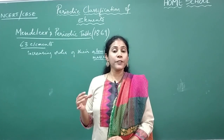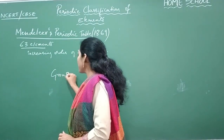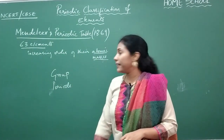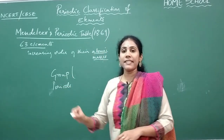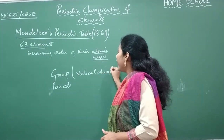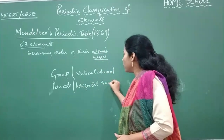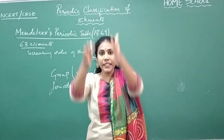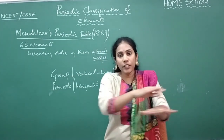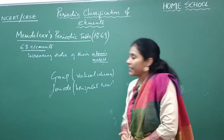Mendeleev is the first person to introduce two important words in his periodic table: group and period. A group refers to a vertical column, and a period refers to a horizontal row. Vertical columns are called groups, and horizontal rows are called periods.